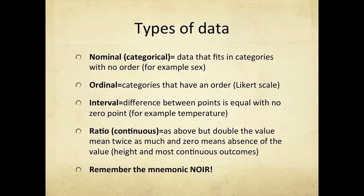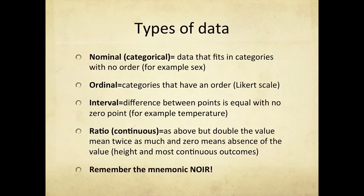Before we look at the flowchart, I want to touch on the different sorts of data you might have. The most useful mnemonic is NOIR — from N to R the data goes up in increasing complexity. Starting with nominal data, sometimes called categorical data: this is data that fits into categories but the categories don't have any order. For example, sex — men or women — would be a nominal variable. Ordinal data is where you have categories that do have an order. A classic example is a Likert scale, ranging from strongly disagree to strongly agree.